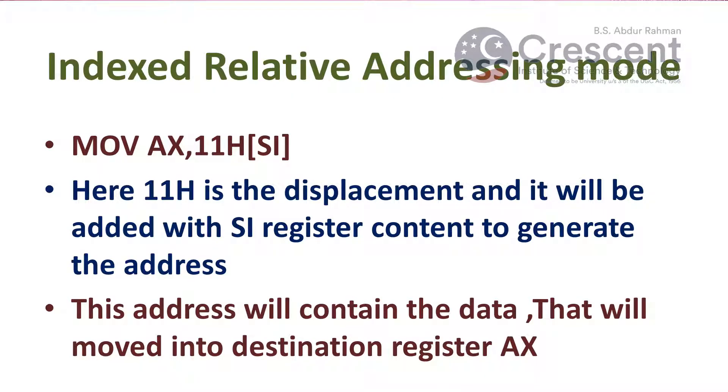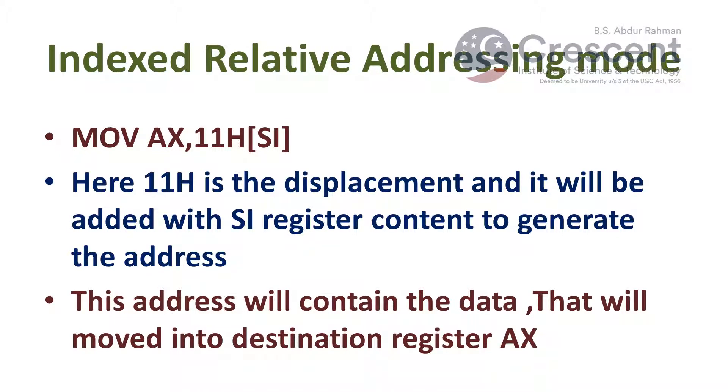Now we shall see indexed relative addressing mode. An example is MOV AX, [SI+11H], where 11H represents the displacement. It is added with the source index register content to generate the address. That address contains the data, and the data available at that address is moved to AX register.